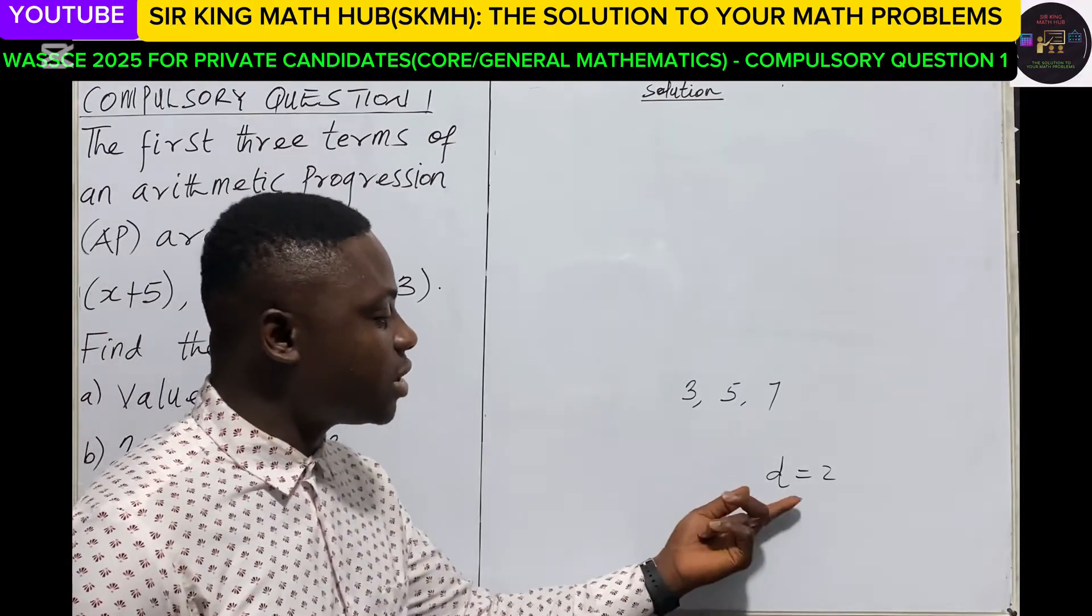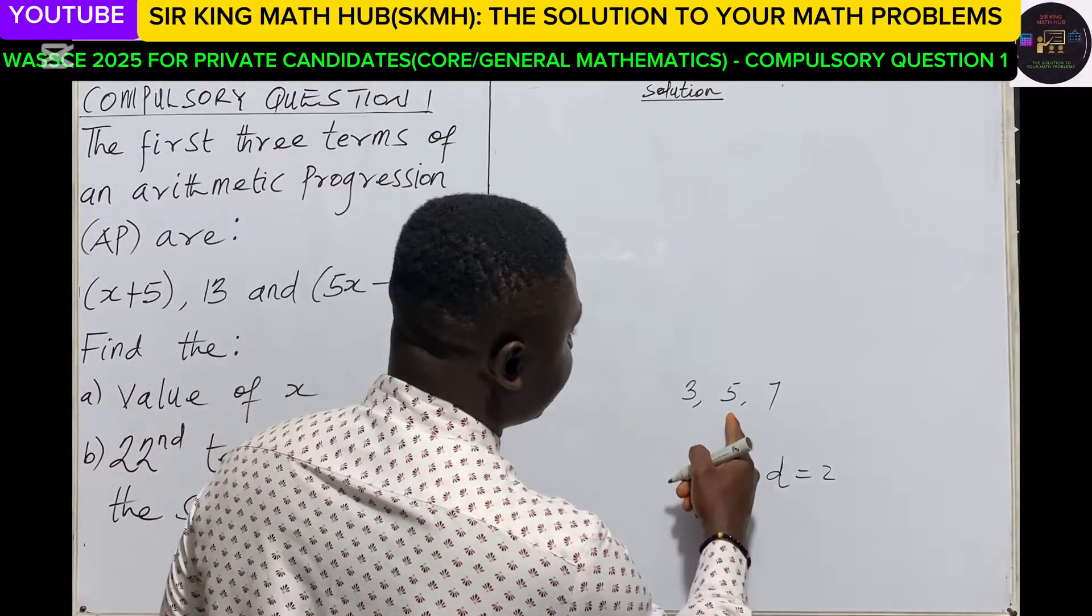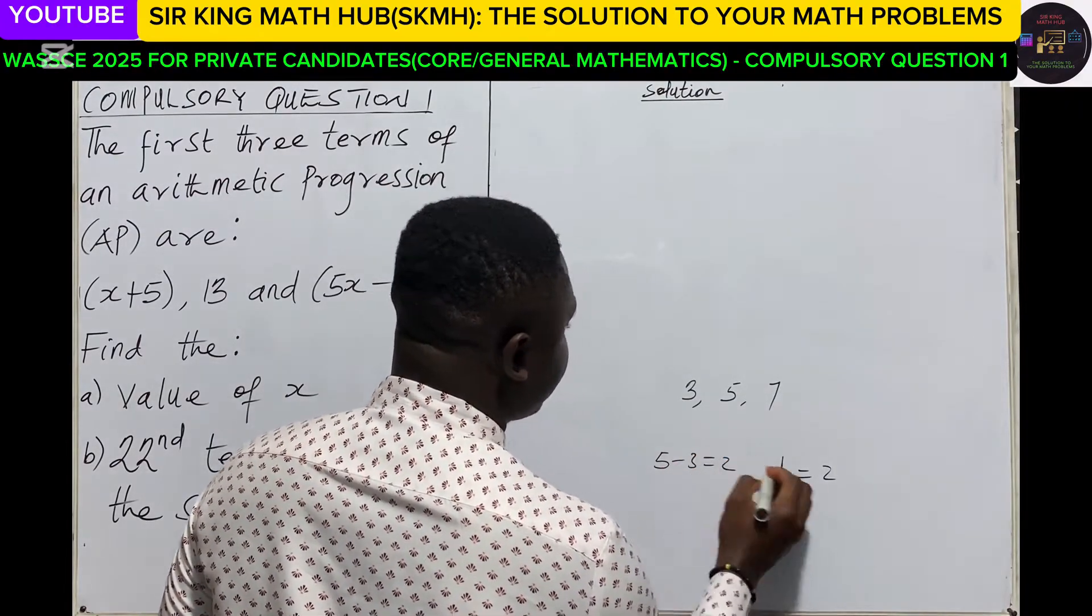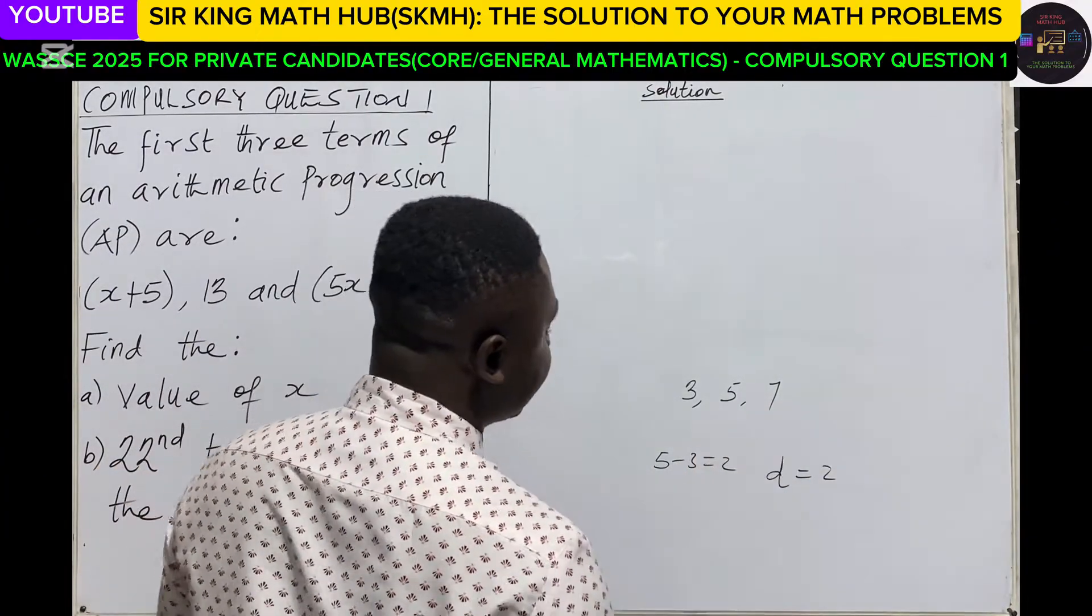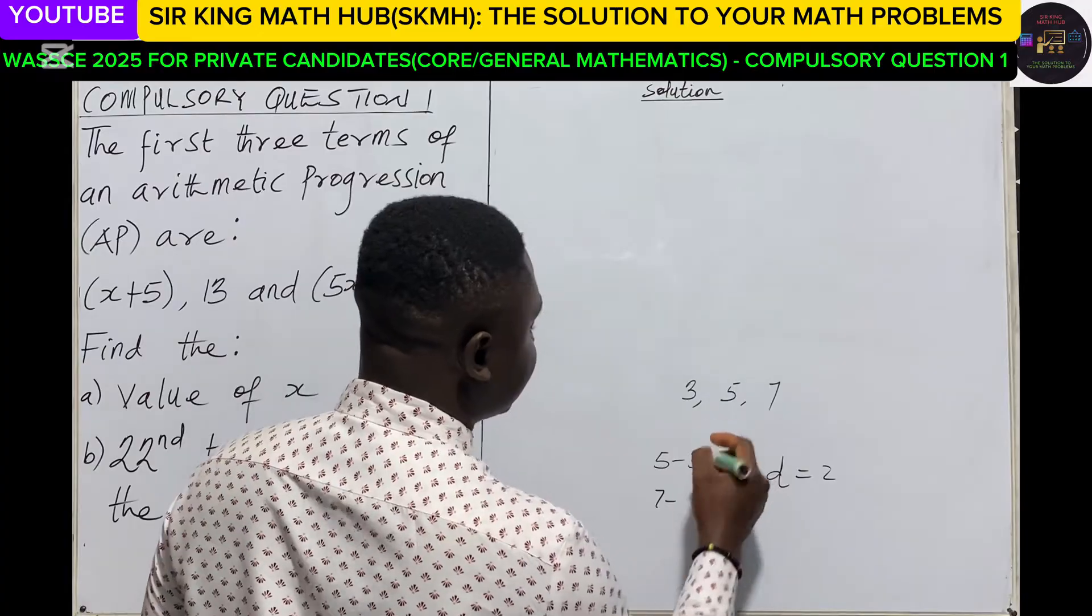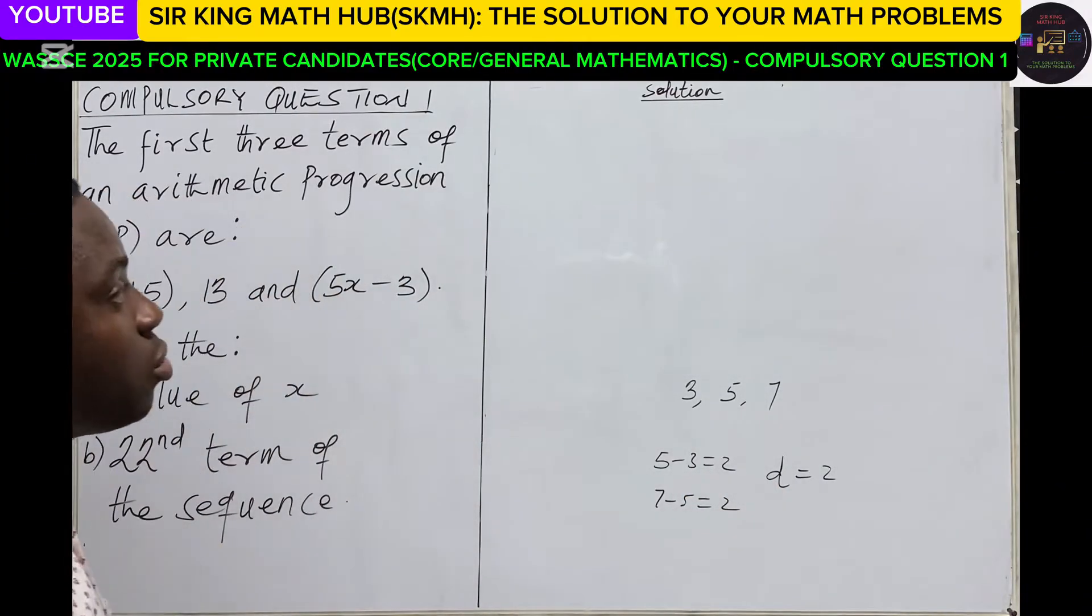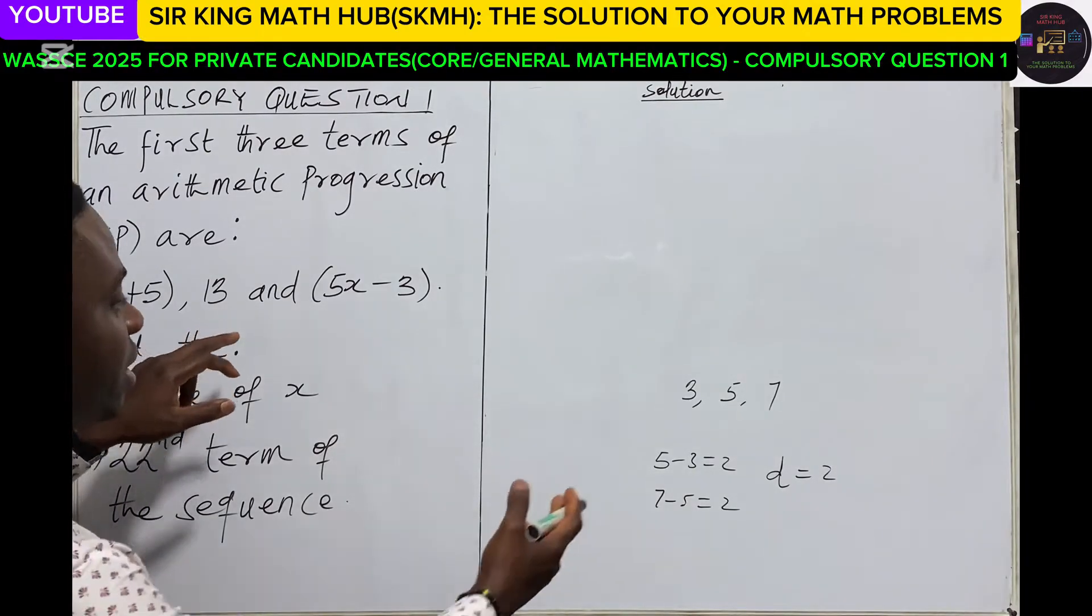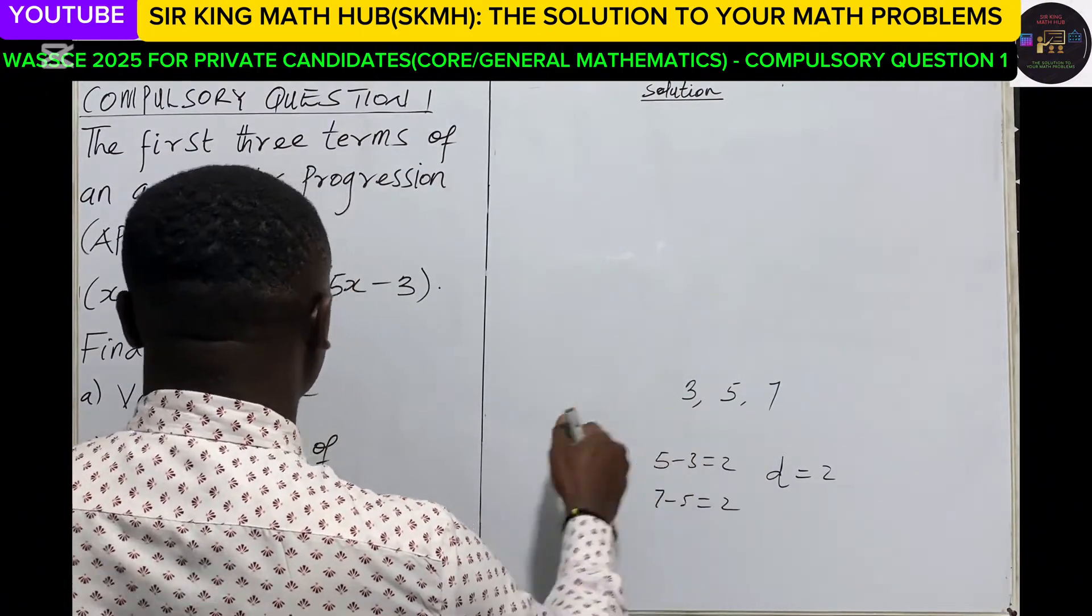Now using these three consecutive terms of the AP, how do we calculate for the common difference? Someone can pick the second term, which is 5, minus the first term, and that will give us the common difference.